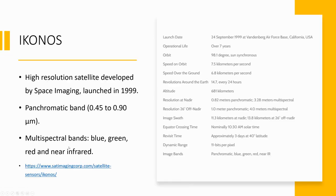IKONOS is a high-resolution satellite developed by Space Imaging, launched in 1999. It has two modes: the panchromatic band has a spectral range from 0.45 to 0.9 micrometers, and the multi-spectral mode has four bands — blue, green, red, and near-infrared.